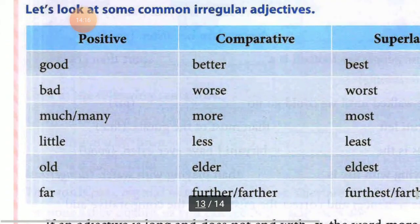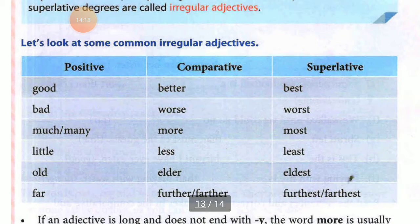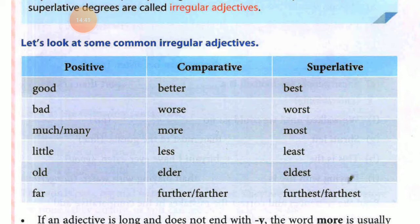You have to learn this table. Aapko yeh table yaad karna hai aur kaise karna hai? Good, better, best. Bad, worse, worst. Much, more, most. Little, less, least. Old, elder, eldest. Far, farther, farthest.